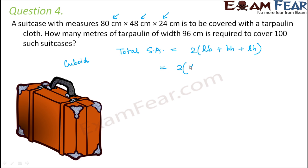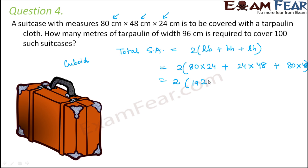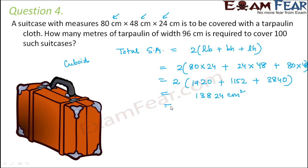Total surface area = 2 × (80×24 + 24×48 + 80×48) = 2 × (1920 + 1152 + 3840) = 13,824 square centimeters, which equals 1.3824 square meters. This is the total surface area of one suitcase, so that much cloth area is needed to cover it.